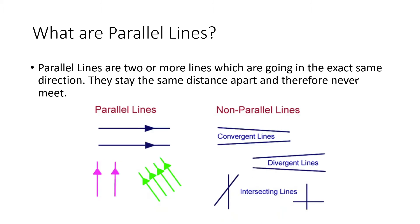Here are some images that explain what parallel lines look like. You can see two or more lines going in the same direction and the exact same distance apart. And then you have some examples of non-parallel lines — lines that, if they continue going, will touch each other and intersect because they are not the exact same distance apart.